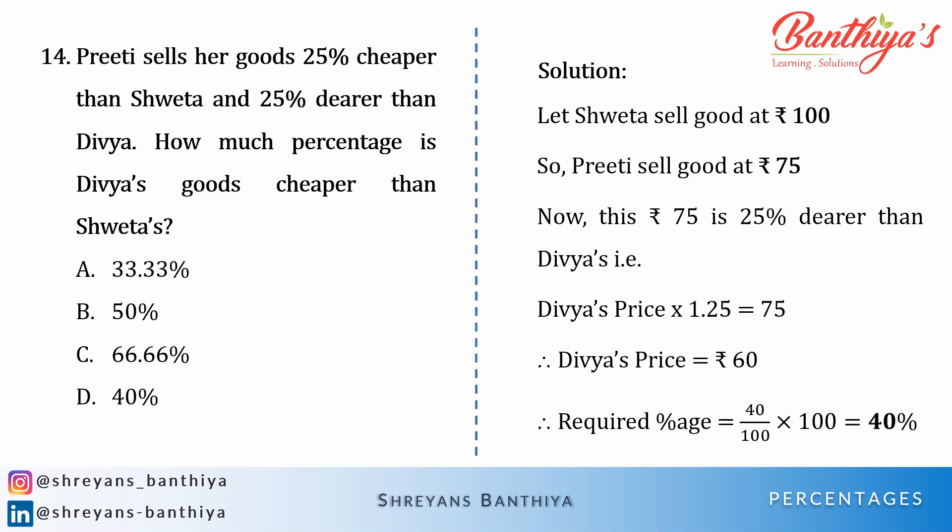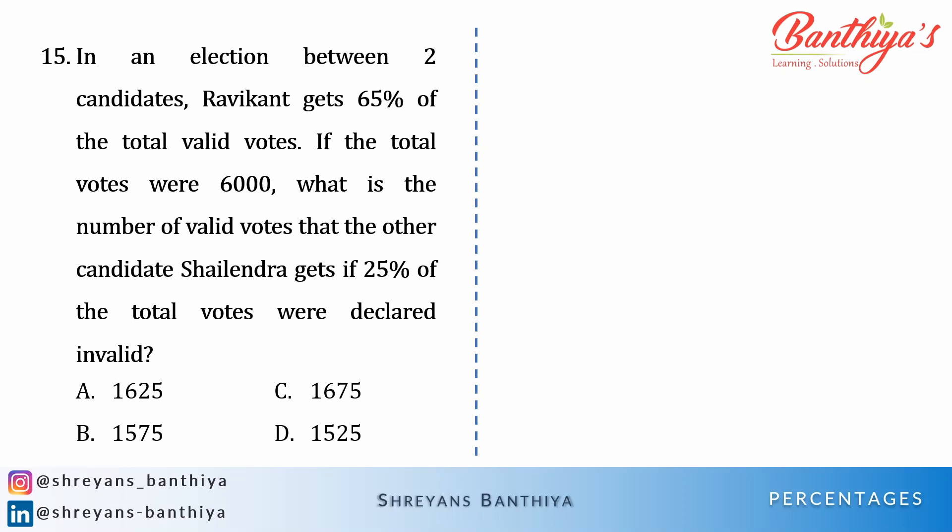Now let's see the last question for today's video. In an election between two candidates, Ravikant gets 65% of the total valid votes — the most important thing here is 'valid votes', and there are only two candidates. If the total votes were 6,000 — that is valid plus invalid equals 6,000 — and 25% of the total votes were declared invalid, what is the number of valid votes that the other candidate Shailendra gets? So out of 6,000 we first reduce 25%, get the valid votes, and since Ravikant got 65%, Shailendra gets 100 − 65 = 35%.